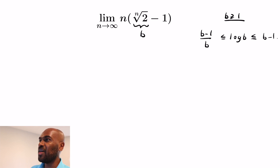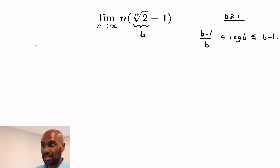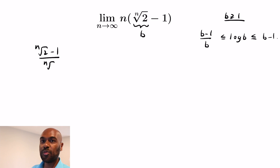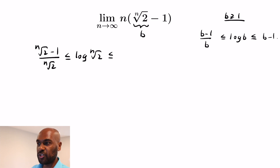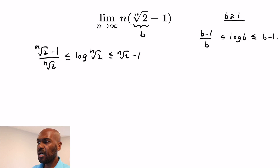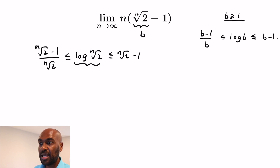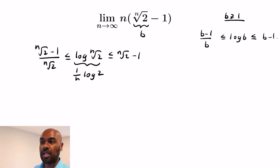So we get this inequality in terms of b using the area comparison. Now we let b be the nth root of 2 and use these inequalities. On the left-hand side we get (nth root of 2 - 1) divided by the nth root of 2, which is less than or equal to log of the nth root of 2, which is less than or equal to the nth root of 2 minus 1. We can rewrite the middle term using logarithm rules as (1/n)·log 2.